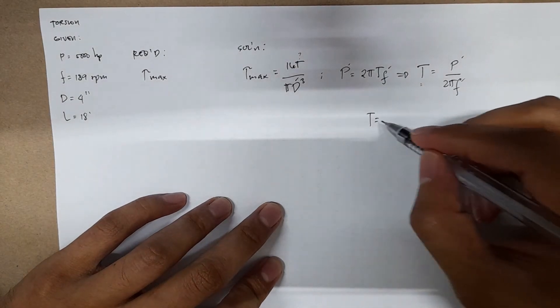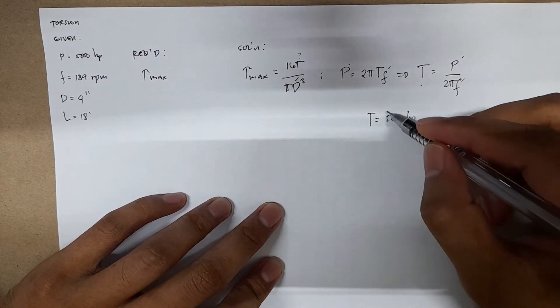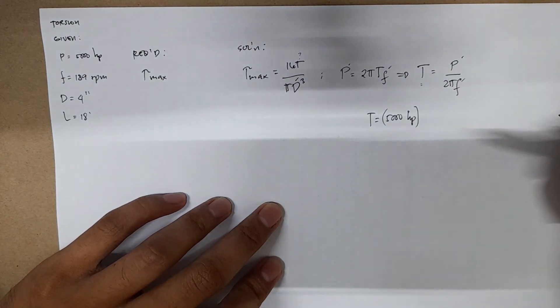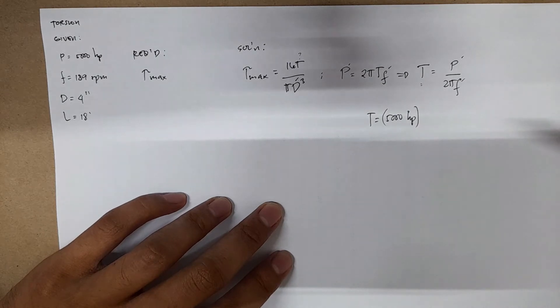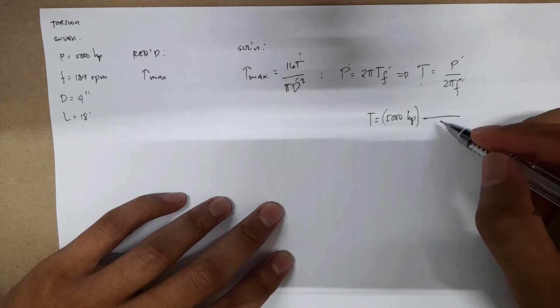Torque is equal to 5000 horsepower, but we need to convert the horsepower into pound foot per second. This is power, so just remember this.